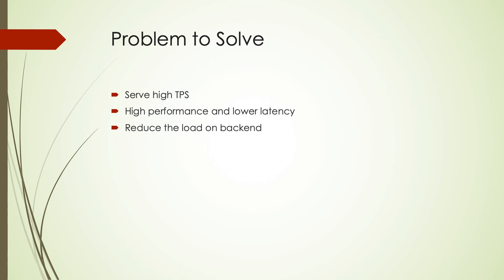Another problem that can be solved: say you have a lot of components and downstream systems from where you are fetching data. Many organizations have some data that is more static in nature — it doesn't change very frequently, maybe in a week, a month, or a year. In that case, it is always suggested to keep a cache copy so that you don't have to hit the downstream for every single request. You hit the downstream, get the data, keep it in cache, and serve further requests from the cache.